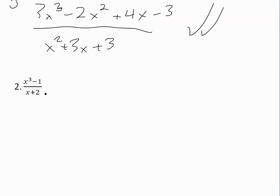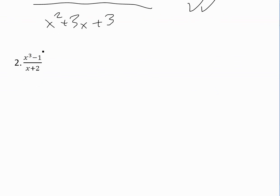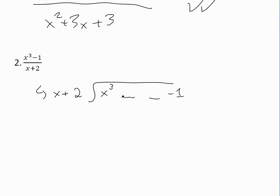Example 2 is x cubed minus 1 divided by x plus 2. In this case, x cubed is two degrees higher than x. When we write this out, it's a bit different — we need to leave space for placeholder terms. We write x cubed, then leave space for a virtual 0x squared term, then 0x, then negative 1. We multiply x squared to get x cubed, giving x cubed plus 2x squared. We treat the missing terms as 0x squared and 0x.